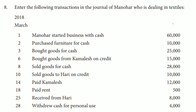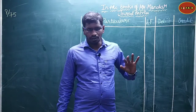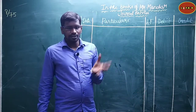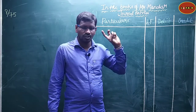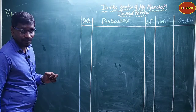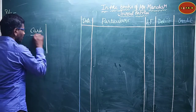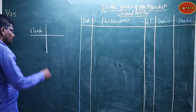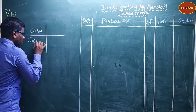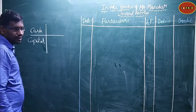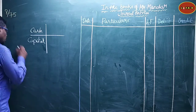Enter the following transactions in the journal of Manovar, who is dealing in textiles. 2018 March 1: Manovar started business with cash rupees 60,000. So we are going to record this now. Cash is coming into the business, and the business is started, so the capital account of Manovar will be credited.